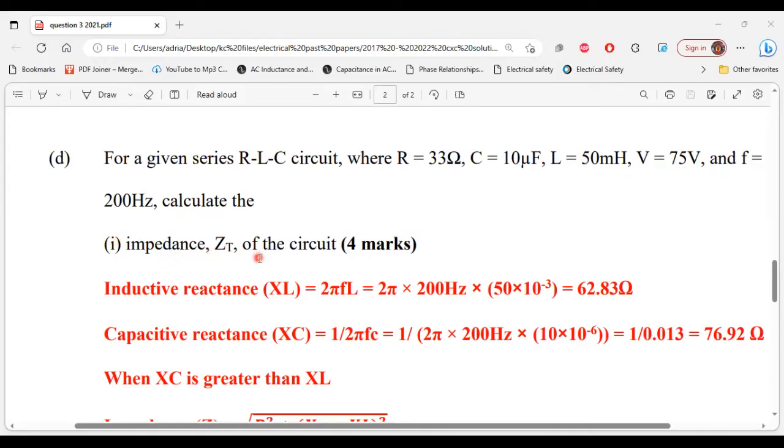So based on part D, we are given the resistance which is 33 ohms, the capacitance 10 microfarads, the inductance 50 millihenries, the voltage 75 volts, and the frequency of 200 hertz. All right, so inductive reactance is equal to 2πfL, that is 2π × 200Hz × 50 × 10⁻³.